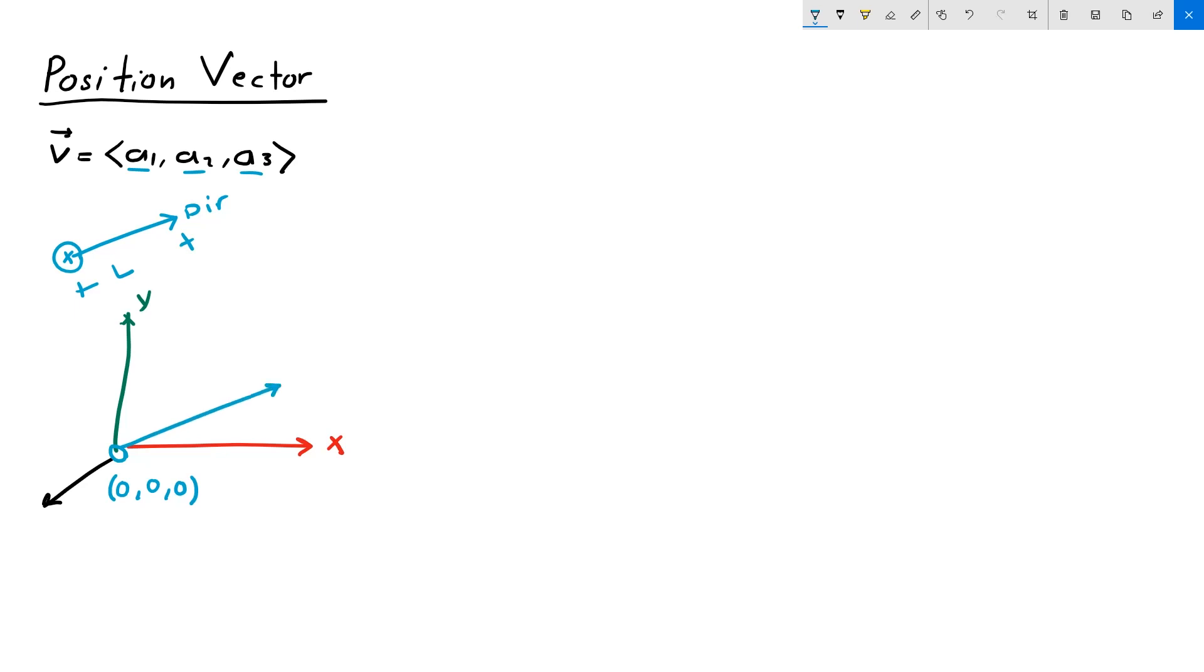If we anchor any vector v to the origin of the coordinate system, that particular vector representation is called position vector. Let's take an example. Suppose we have a vector v equals 5, 2, 0.